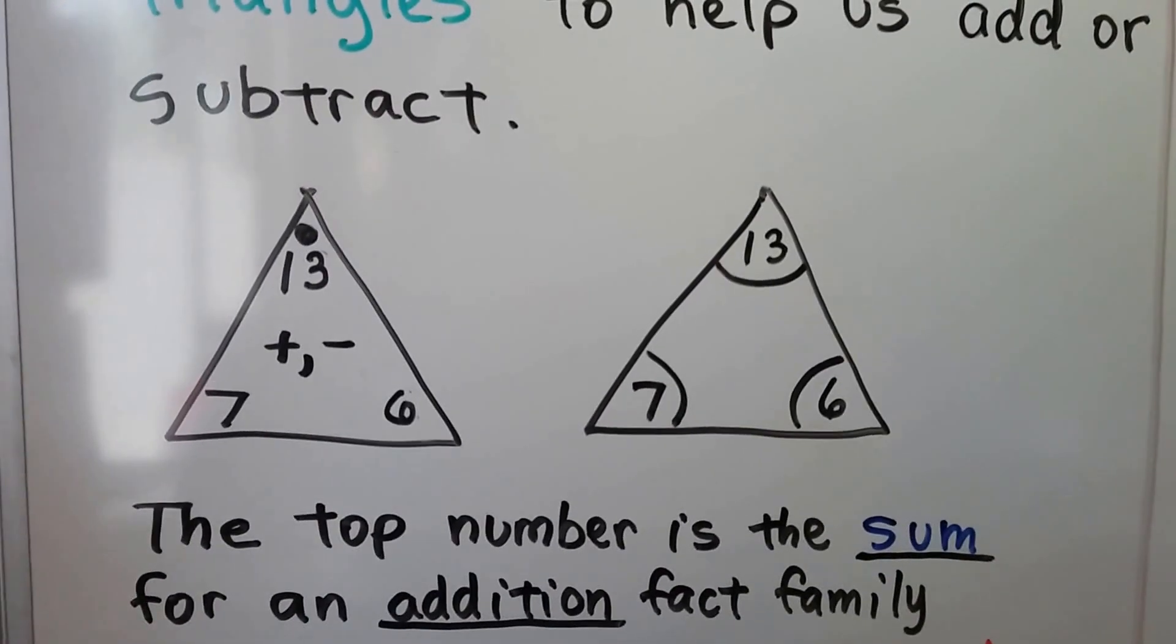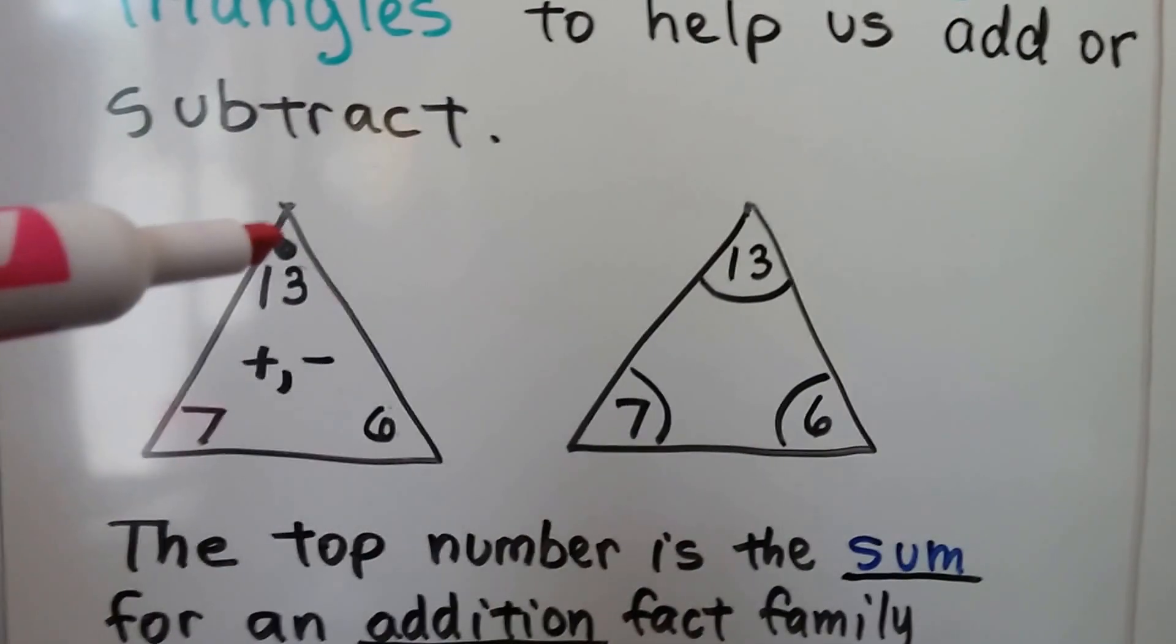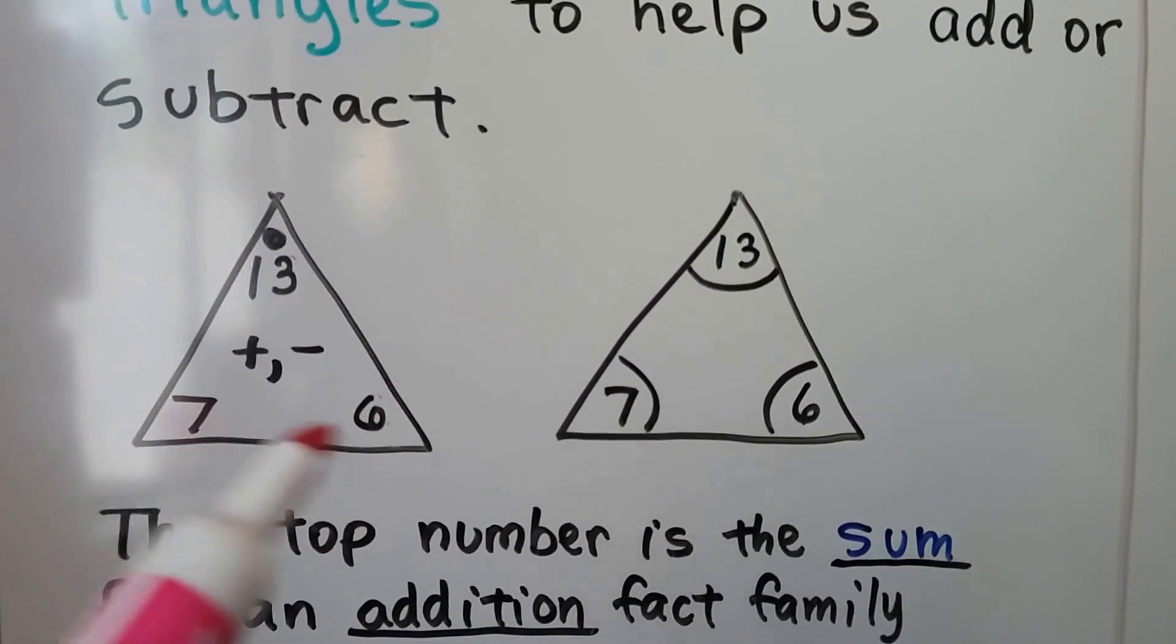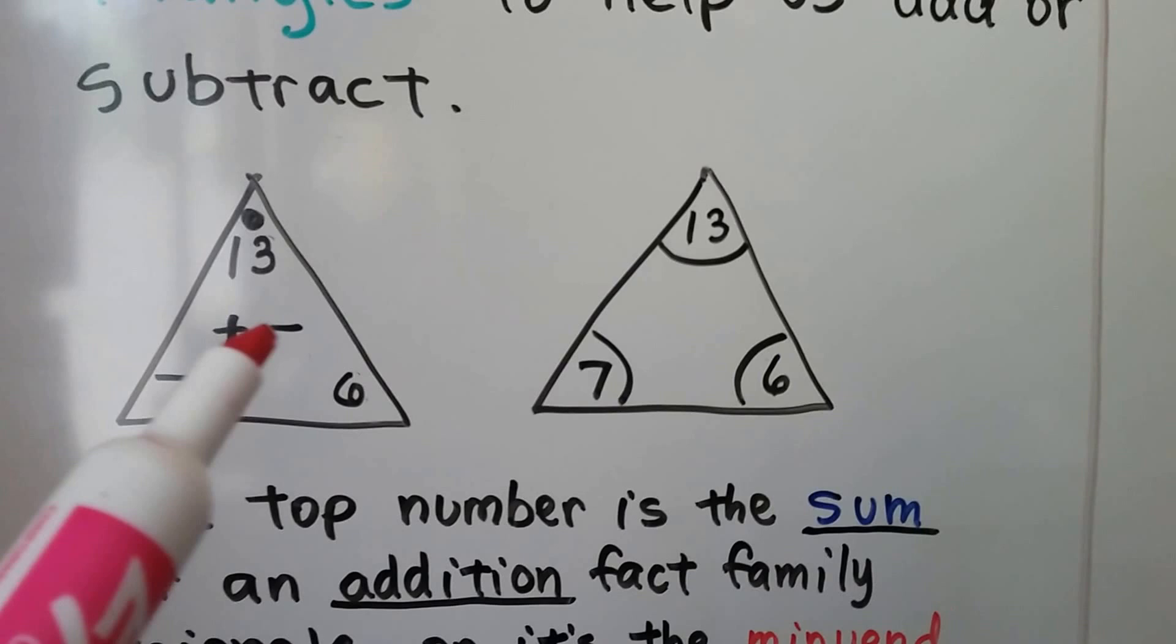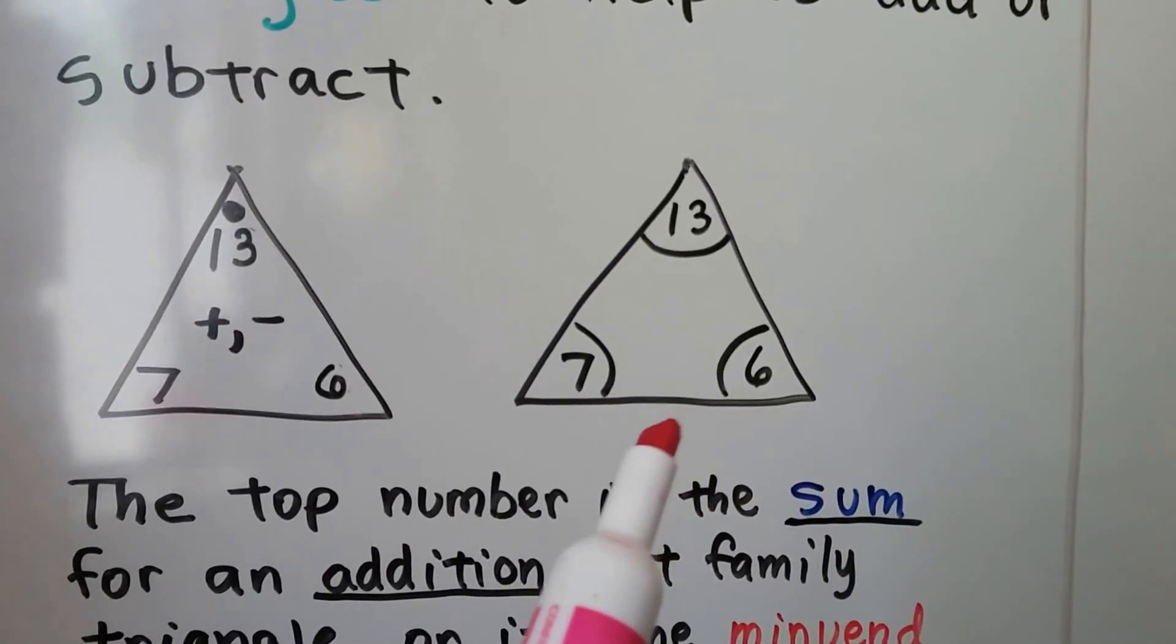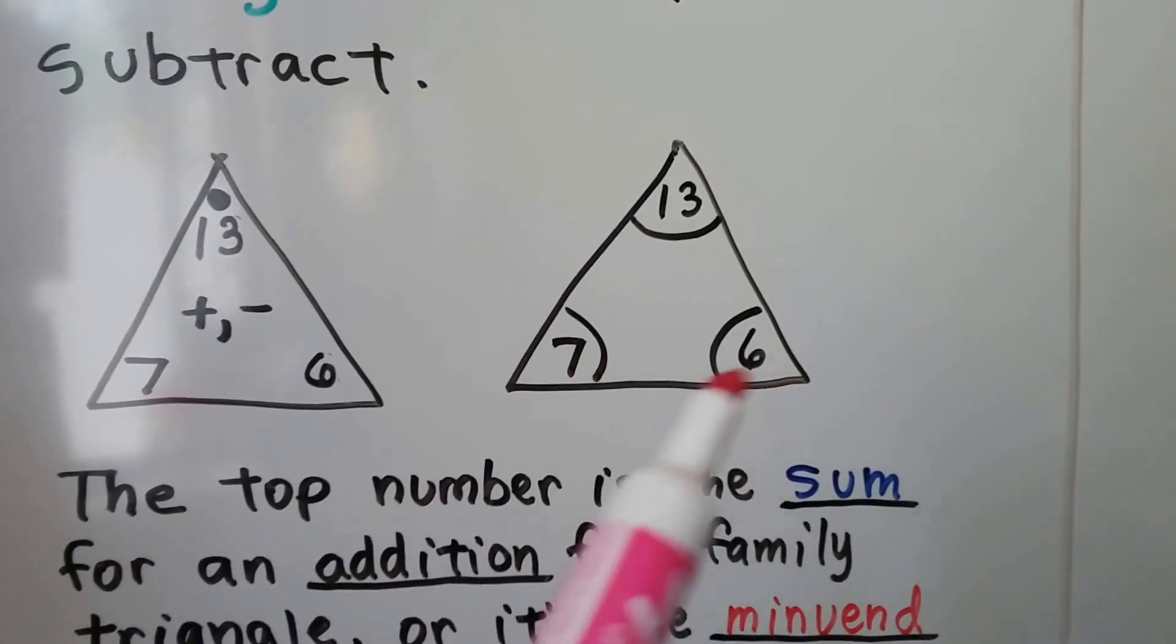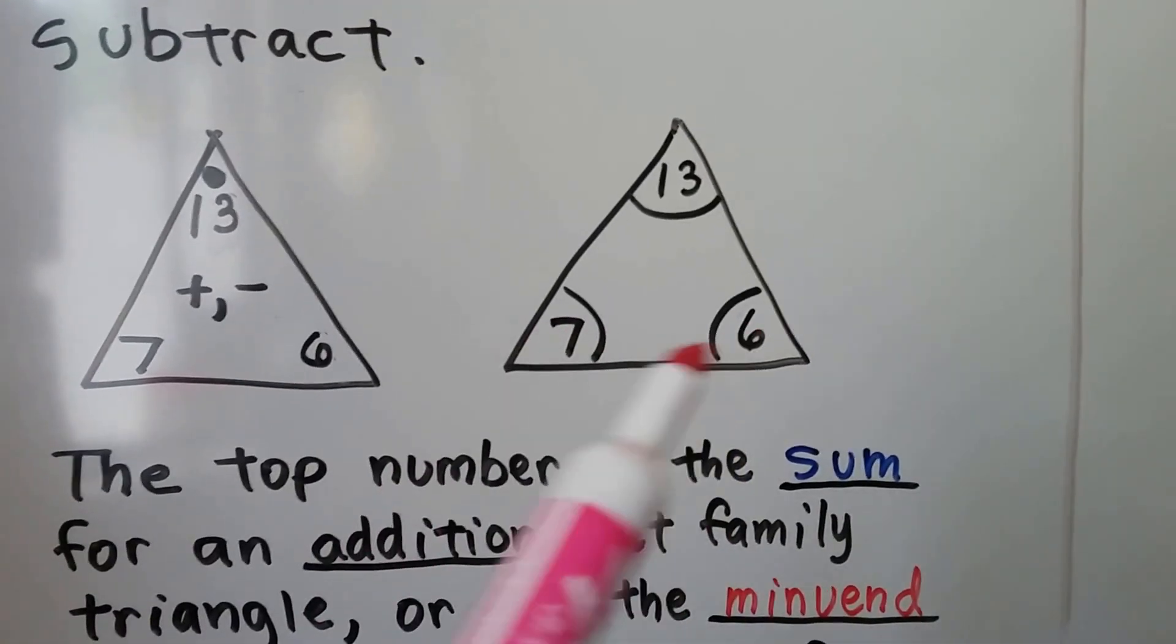Sometimes you'll see the triangles with a little dot on the top and that tells us that that's the sum, or in subtraction that's the minuend, and then we've got the two numbers down here in each corner. You might see a plus and a minus in the middle here that are separated with a comma. You might see the triangle looking like this. This is still our sum or our minuend and these are either our addends or the subtrahend and the difference.